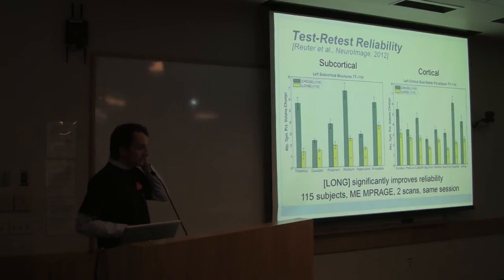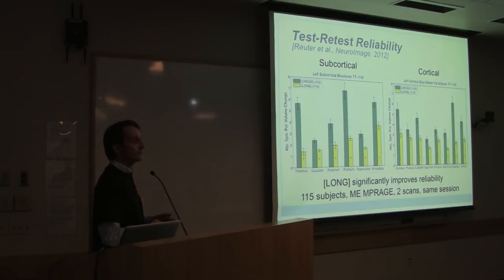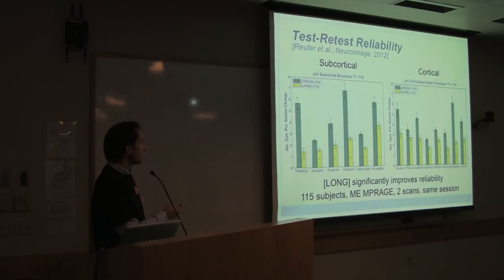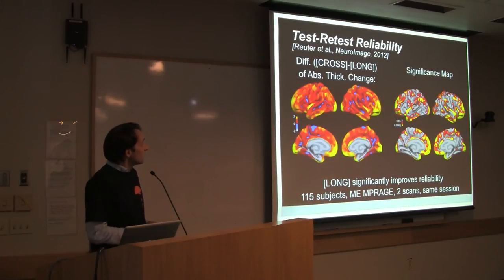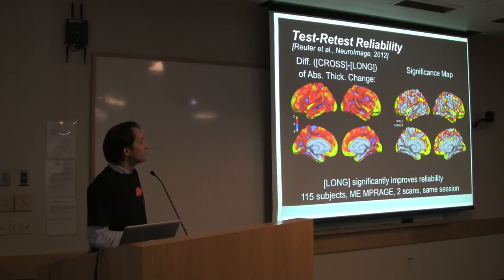For test-retest reliability with these same 115 subjects scanned in the same session, running through both streams shows that the cross-sectional stream produces large absolute changes — that's the noise. The longitudinal stream clearly and significantly reduces noise across all subcortical and cortical structures, giving more reliable results with less error. The same is true for thickness analysis — thickness measurements are significantly more reliable with the longitudinal stream everywhere in the brain.